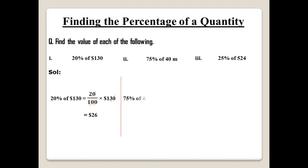Second one: 75 over 100 multiplied by 40 meters. You can cancel the zero of 40 with a zero of 100. Then multiply 75 with 4. Note: if there is some denominator having 10, 100, 1000 — any power of 10 — do not cancel with any other denominator if the zero is not being fully cancelled out. Here you multiply 75 with 40 and the answer is 300 over 10. Cancel the zero, and the answer is 30 meters.